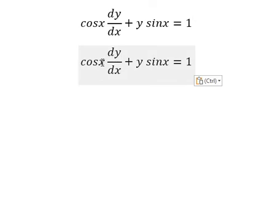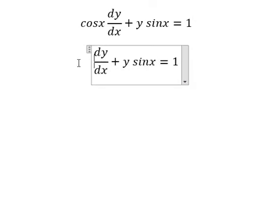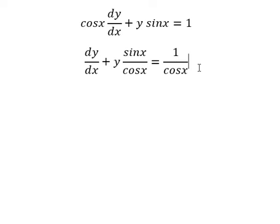We divide both sides by cosine x. Next, we have y and the first derivative of y.